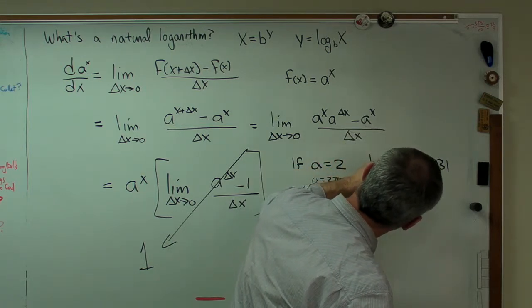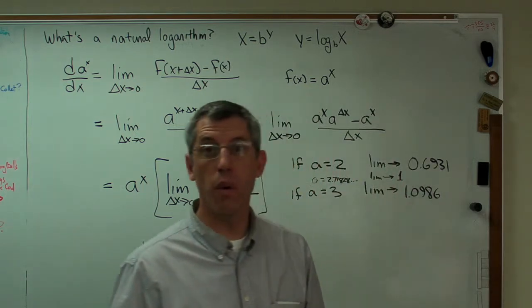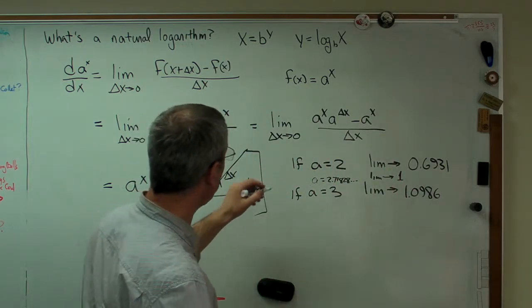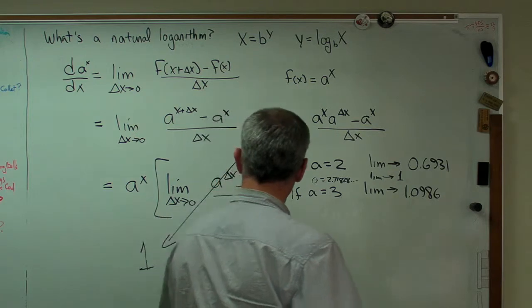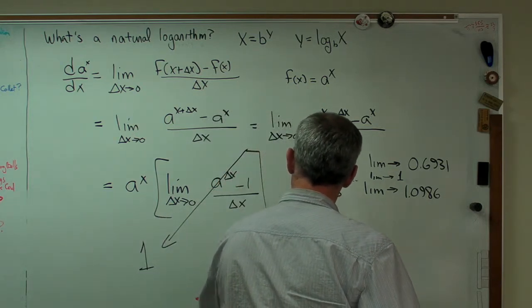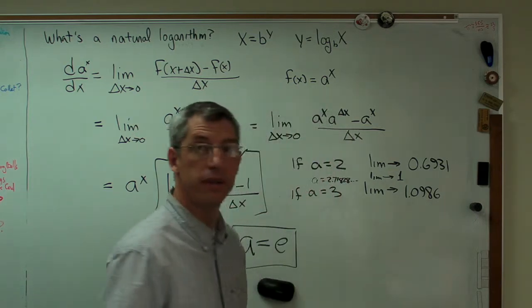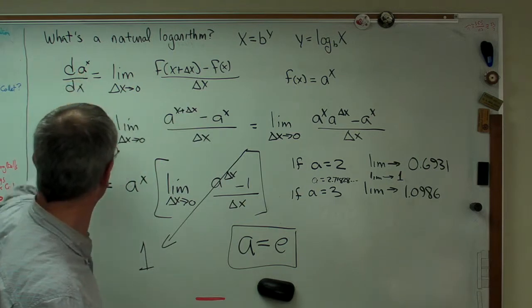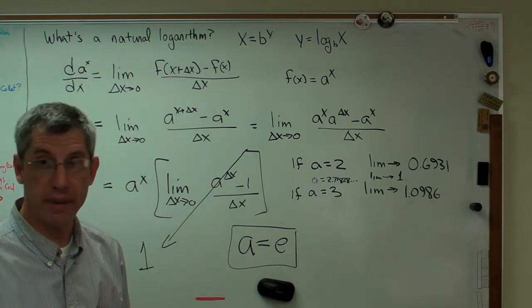Then the limit goes to 1, which is what we want. So, only if a equals e, only if that's true, does that derivative equal itself. That's what we need to know.